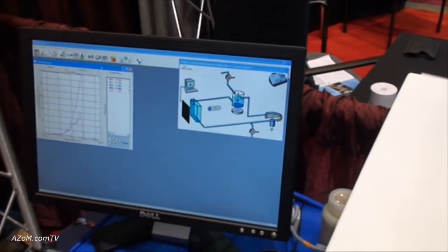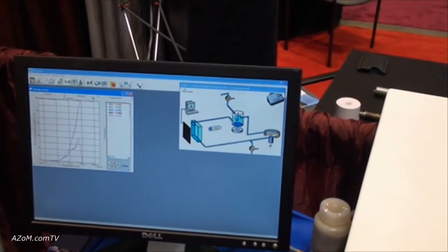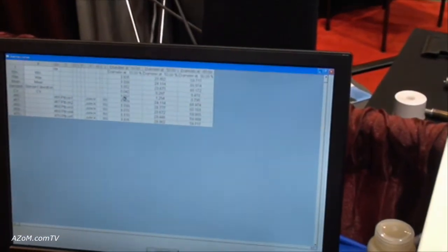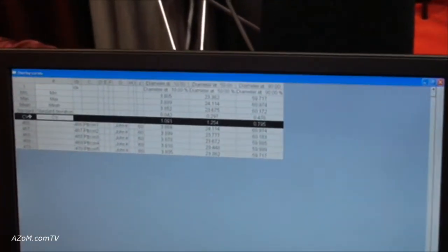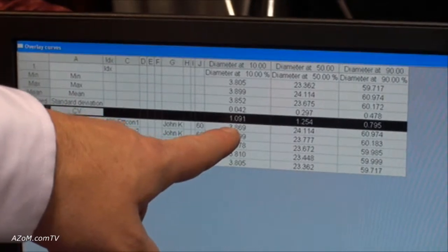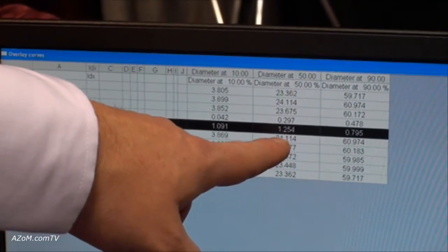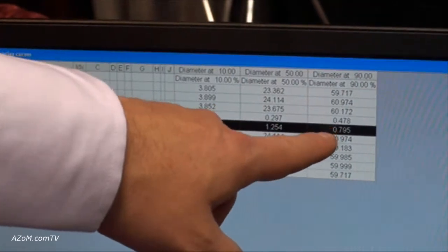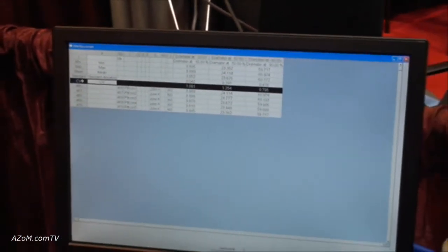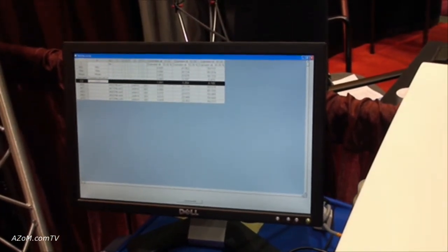Some of the results you will see, this is an overlay of one of the samples we are running here at PitCon this year and you will notice the very good overlays of the same sample run five times. What customers will look for is a very good coefficient of variation and in this case we want to get as close to zero as possible as far as a difference between one sample to the next. Here you can see we have a 1% coefficient of variation at the diameter of 10%, at the median size of the diameter 50% we have a coefficient of 1.2, and at the 90% by volume we are looking at a 0.8 or 0.795% coefficient of variation which is very good. Even traceable standards want you to be around a 3% coefficient of variation for the D50, so we are double that at the least.